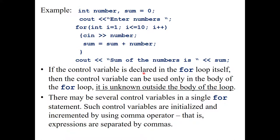If the control variable is declared inside the for loop, it is only known within the body of that loop — it is unknown outside. So after the loop ends, if you try to use cout << i, you will get a garbage value, not 10 or 11. The variable's scope is bounded to the loop block.